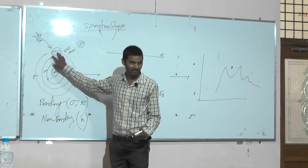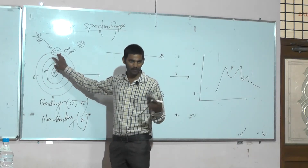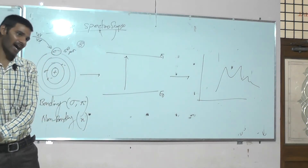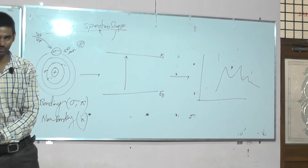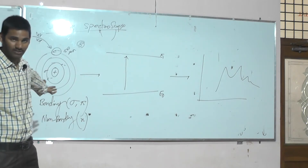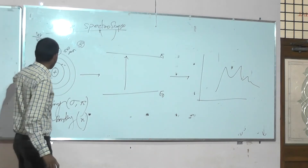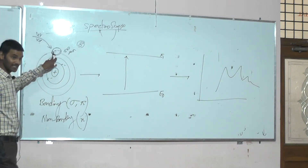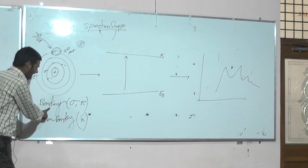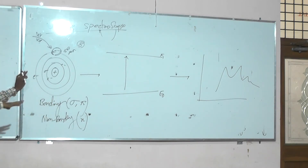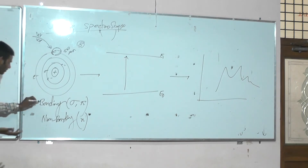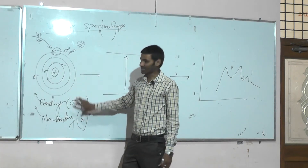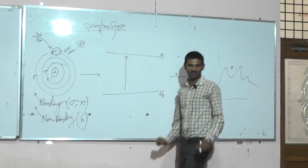Every compound may have three types of electrons: sigma, pi, and N. Some compounds may have sigma electrons, some may have pi electrons, and some may have N electrons. For example, alkane does not have N electrons, and alcohol does not have pi electrons. So the valency electrons are characteristic — the absorption property depends on whether the electron is bonding or non-bonding. Based on the character of these electrons in the outermost orbit, they absorb UV-visible radiation.